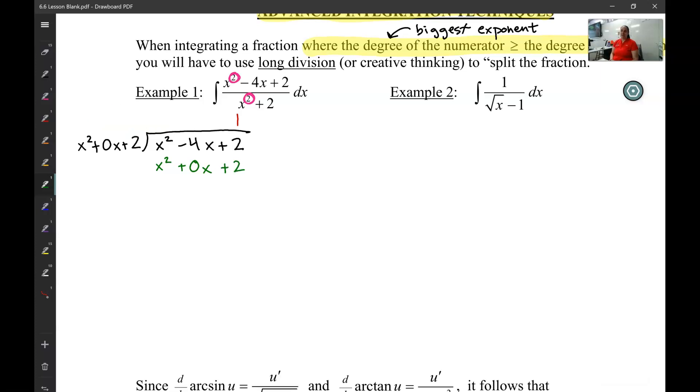Next, I need to subtract. Now, this means if I'm going to subtract, I'm basically going to change the signs of everything. So I'm going to change that to a negative, change that to a negative, change that to a negative. Subtract them all. So x squared minus x squared is nothing. 2 minus 2 is nothing. Negative 4x minus 0x is negative 4x.